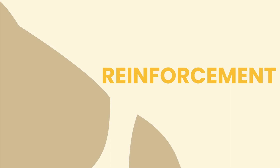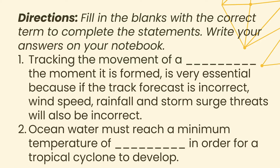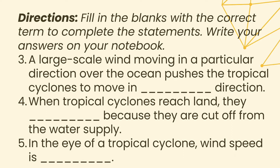Reinforce what you have learned. Answer this next activity: fill in the blanks with the correct term to complete the statements. Write your answers on your notebook. 1. Tracking the movement of a ___ the moment it is formed is very essential because if the track forecast is incorrect, the wind speed, rainfall, and storm surge threats will also be incorrect. 2. Ocean water must reach a minimum temperature of ___ in order for a tropical cyclone to develop. 3. A large-scale wind moving in a particular direction over the ocean pushes tropical cyclones to move in a ___ direction. 4. When tropical cyclones reach land, they ___ because they are cut off from the water supply. 5. In the eye of a tropical cyclone, wind speed is ___.